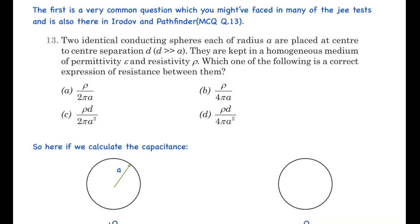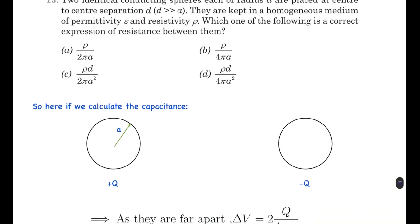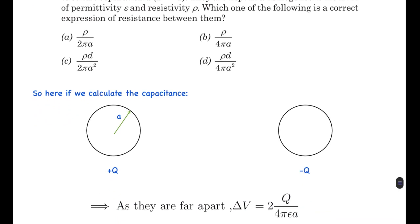Look at the Pathfinder MCQ question number 13 from the chapter on electricity before looking here. The question is: two identical conducting spheres, each of radius a, are placed at a center-to-center separation d which is much greater than their radii. They are kept in a homogeneous medium of permittivity ε and resistivity ρ. Which of the following is the correct expression for the resistance between them? We can solve this using the result RC = ρkε₀.